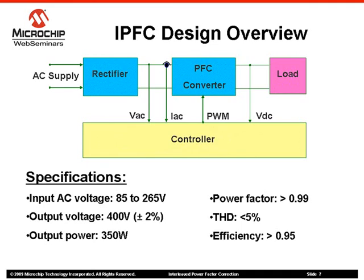A Power Factor Correction block diagram can be divided into three main blocks. First, the rectifier which provides DC voltage to the PFC converter stage. Then we have the PFC converter itself, which provides the control over the current shape and phase lag while regulating the output voltage. And finally, we have the controller block. The PFC converter can be implemented using different circuit topologies, each with their respective advantages and disadvantages.